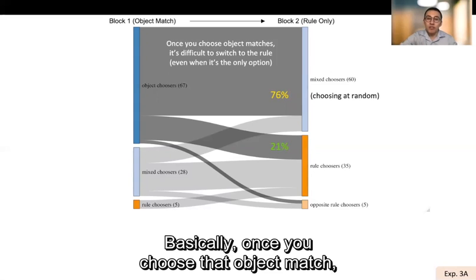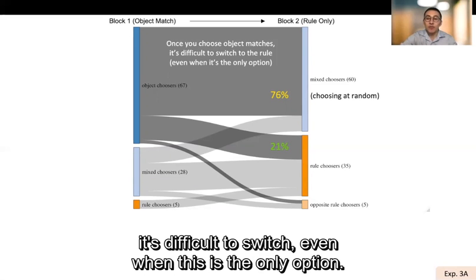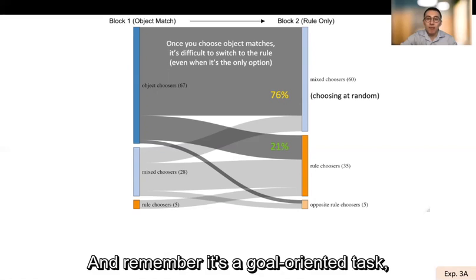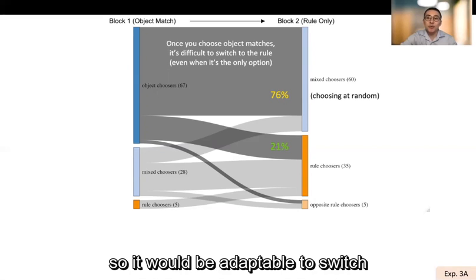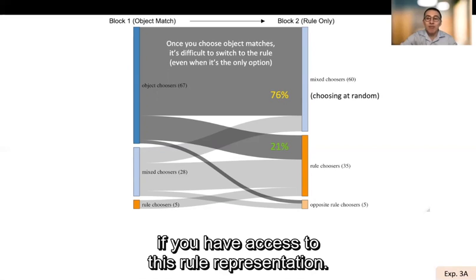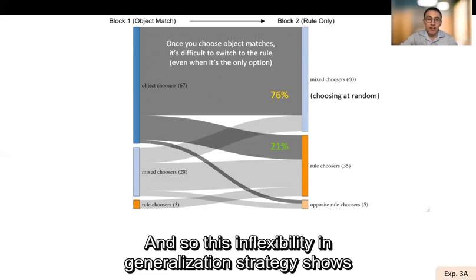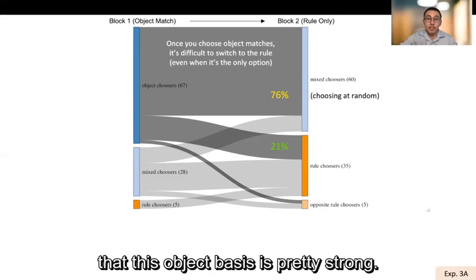Basically, once you choose that object match, it's difficult to switch, even when this is the only option. And remember, it's a goal-oriented task, so it would be adaptable to switch if you have access to this rule representation. And so this inflexibility and generalization strategy shows that this object bias is pretty strong.